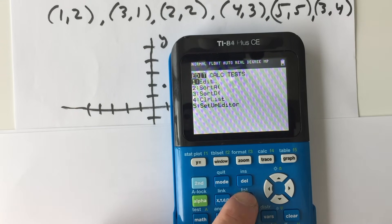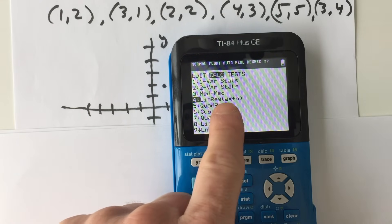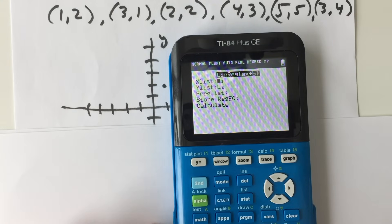See right here where it says STAT, and you want to arrow over to calculate, and you want to scroll down to linear regression. Number 4, see where it says AX plus B, Enter.